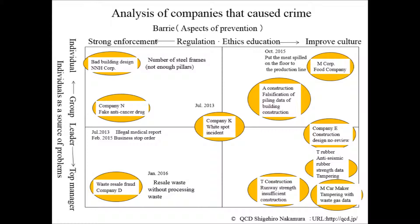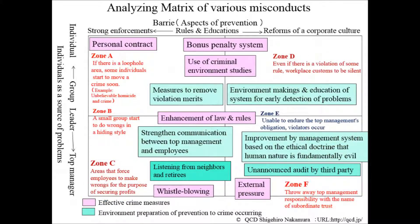I would like to introduce an example where Mr. Nakamura analyzed the company that caused the crime. Please look at the figure. A crime has a leading person, whether an individual or a company. The vertical axis is a factor causing a crime, and the horizontal axis shows countermeasure methods. Using this matrix, you will find each corporate crime written with a circle frame, and when you analyze a case on this figure, you will find measures against each case.